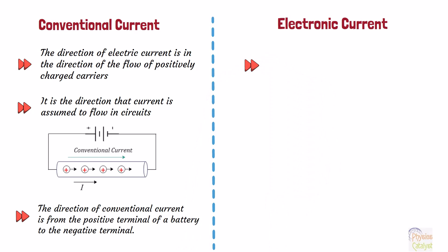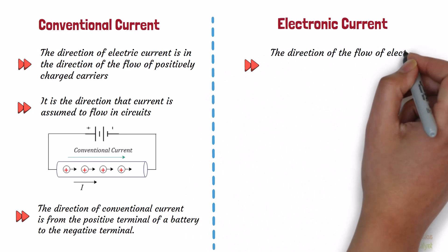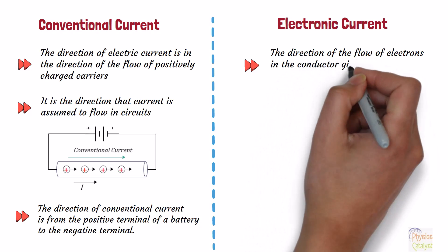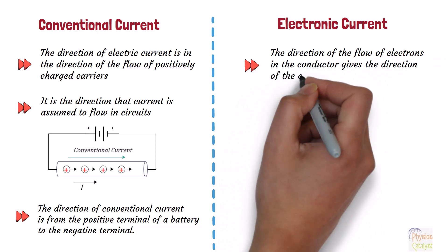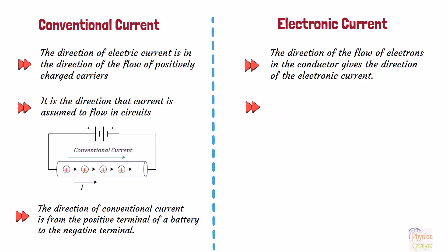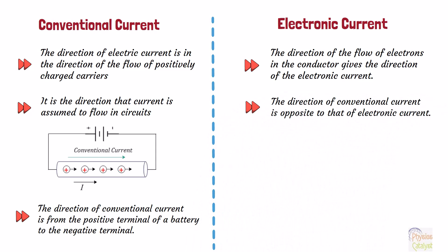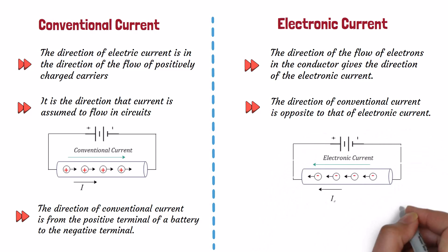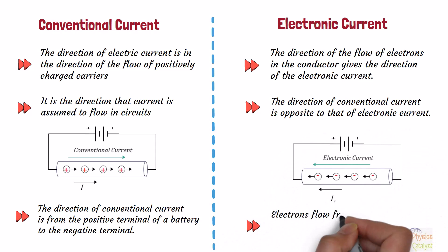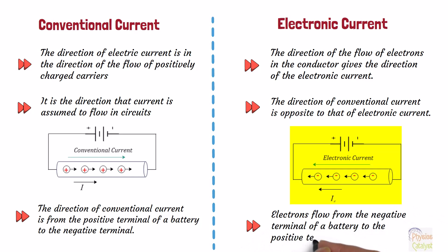Now let's learn about electronic current. The direction of the flow of electrons in the conductor gives the direction of the electronic current. The direction of conventional current is opposite to that of the electronic current. In the case of electronic current, electrons flow from the negative terminal of a battery to the positive terminal of the battery, as shown in this figure.